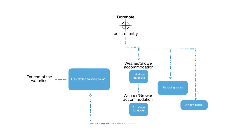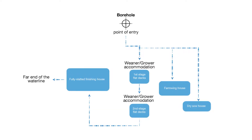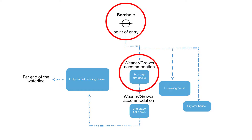Once you have decided what you are testing for, identify where you are taking samples from using a map of the water system. For more guidance on selecting sampling points, see our written SOPs available on our website.